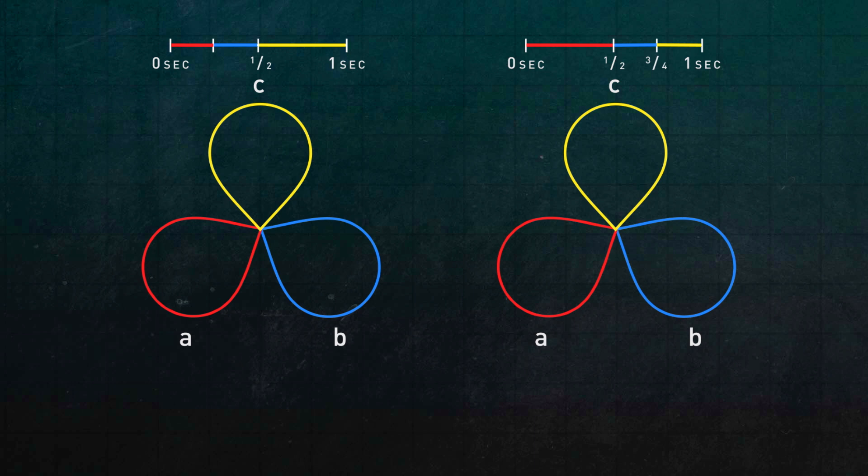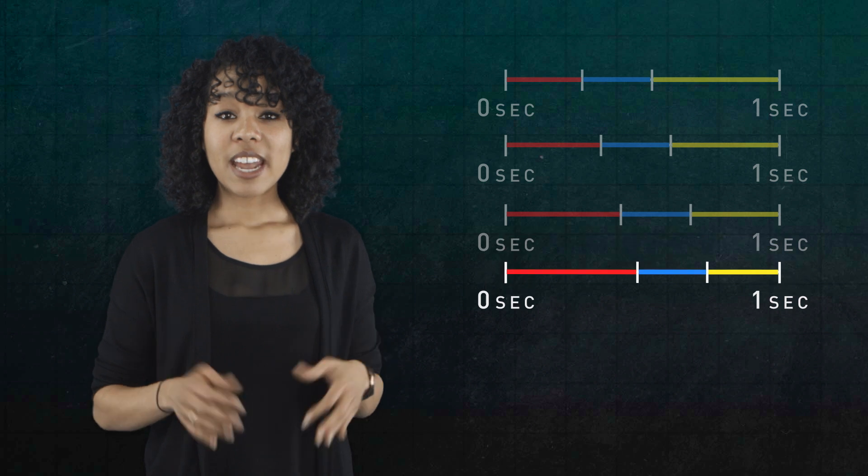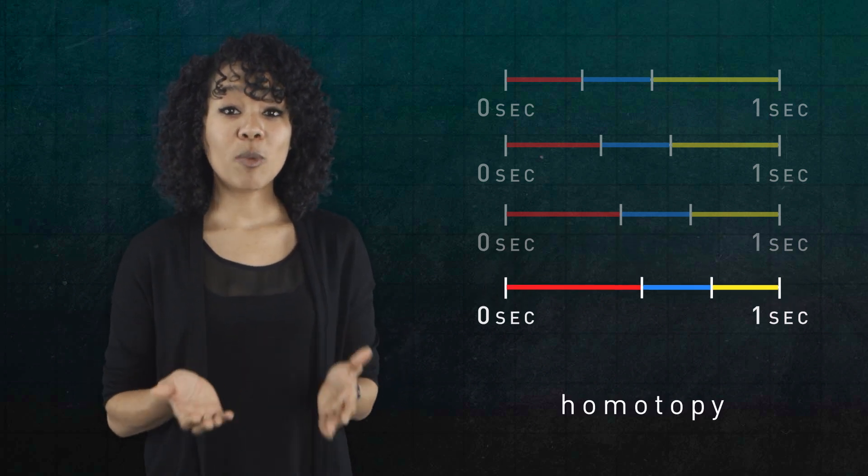So even though the two loops aren't equal, we can get from one to the other by making a continuous adjustment over time. And this adjustment has a name. It's called a homotopy.